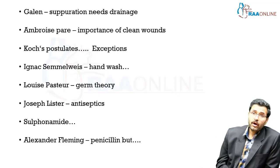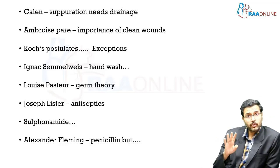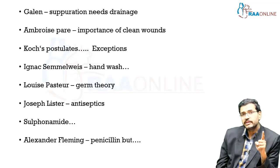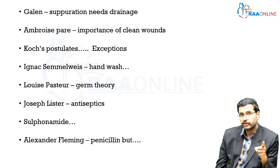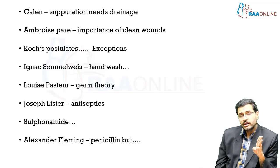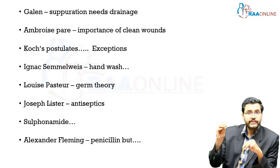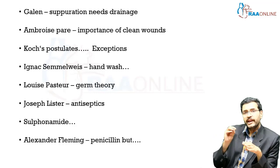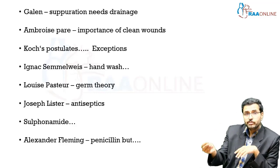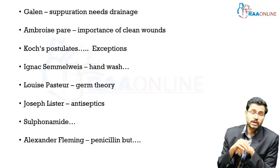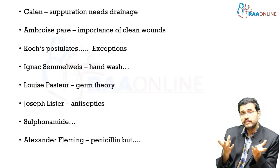Then came Koch, and Koch gave his famous postulates. His four important points were: first, the organism should be seen in all cases of that particular infection; second, you should be able to isolate the organism and grow it in culture outside the body; third, when you introduce this organism into another person, that person should show signs and symptoms of that particular infectious condition; fourth, you should be able to re-isolate the organism from that person and grow it in culture. These were the four postulates of Koch. But of course there are exceptions to any postulate, and even in this case there were exceptions.